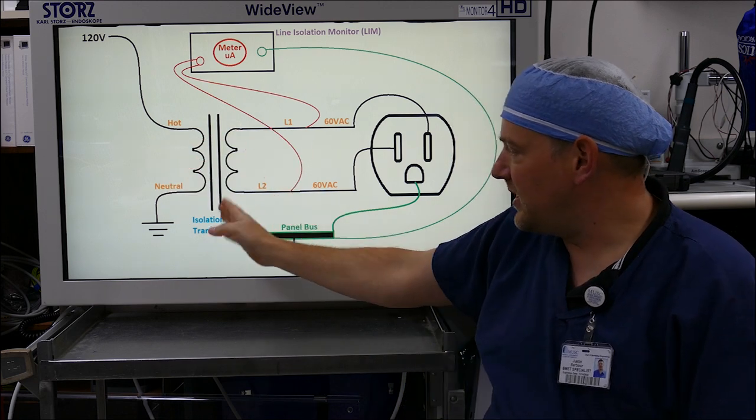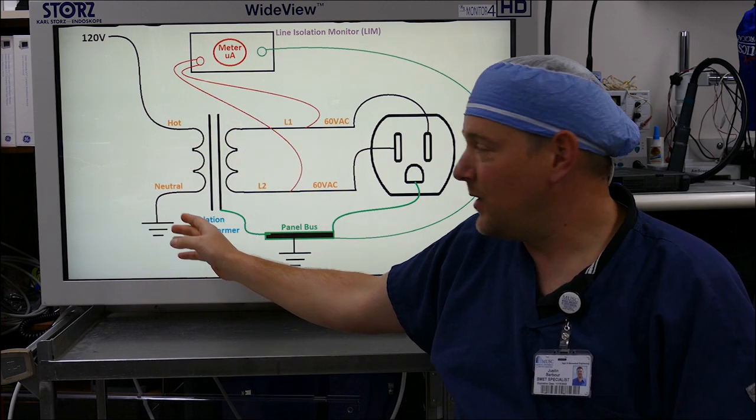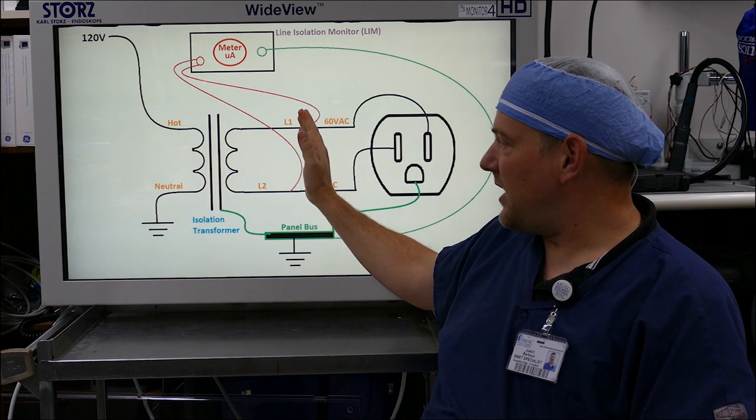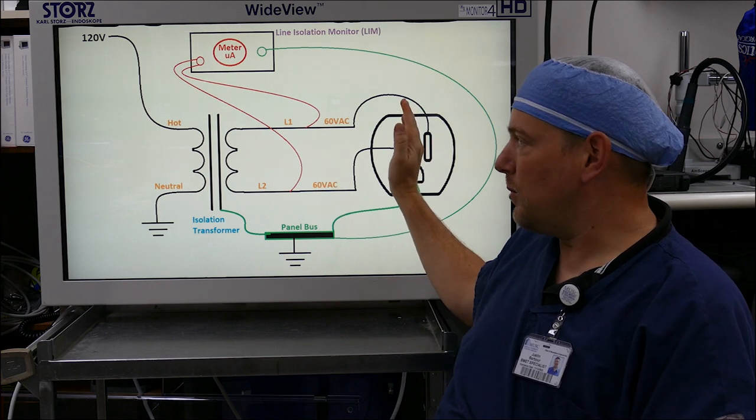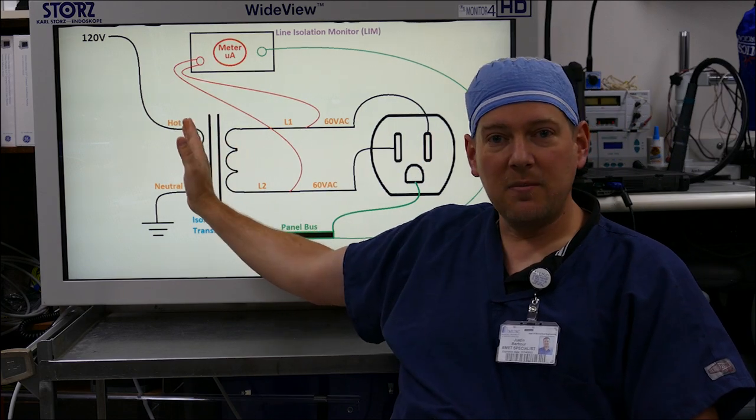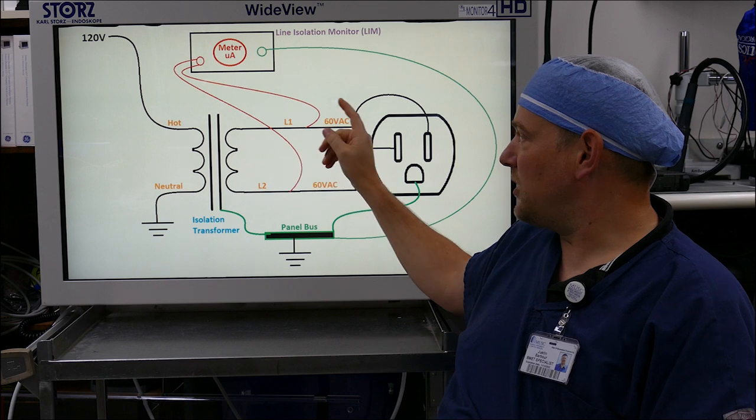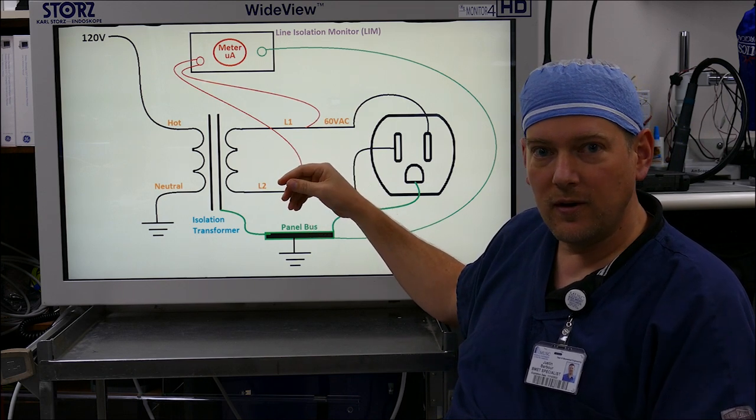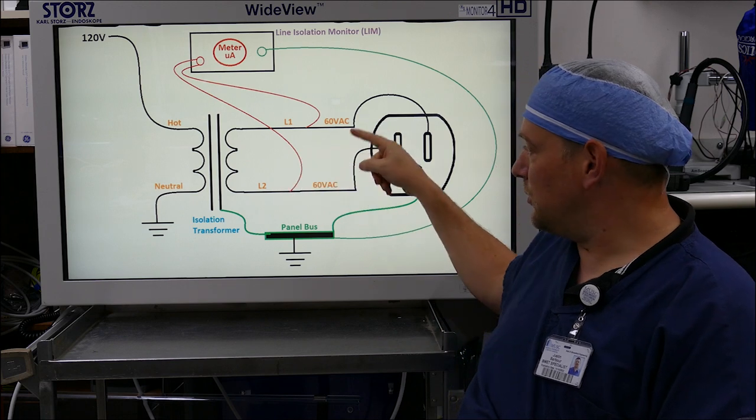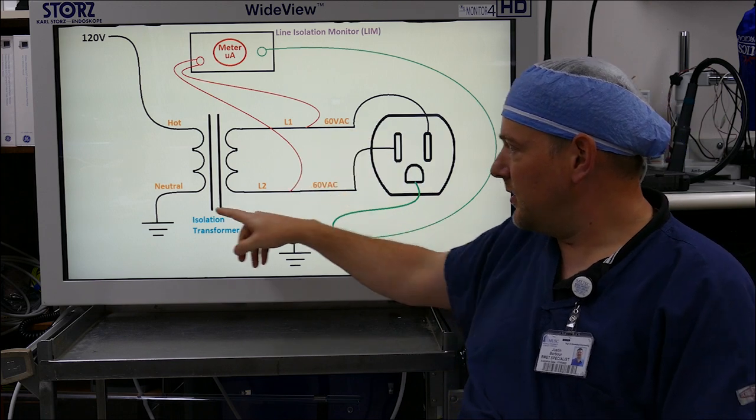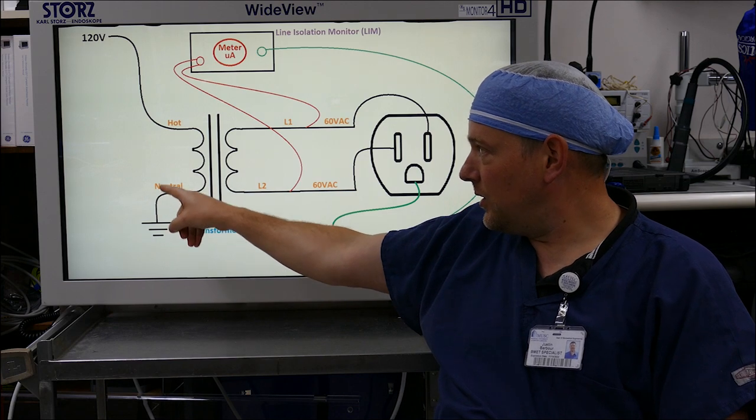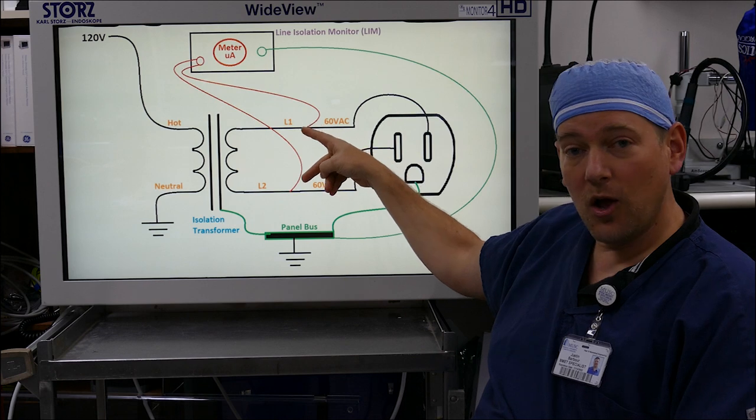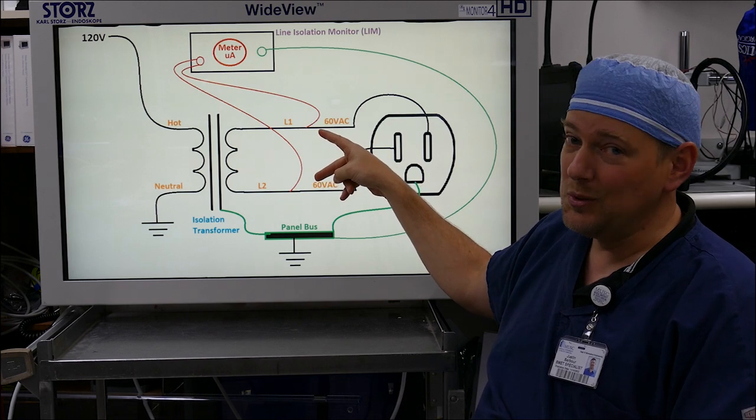So when you touch the hot you are at the ground potential which gives you electric shock. You can see here you have the isolation transformer which separates L1 and L2, which is inside the operating room, from the line power. So when you touch L1 or L2 through a cut cord or whatever else it may be, you are not part of the circuit. Normally you are part of neutral and when you touch hot you get zapped. Over here, unless you touch L1 and L2, you will not get zapped.